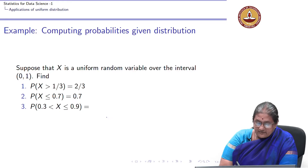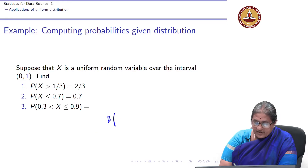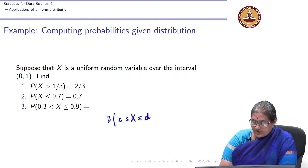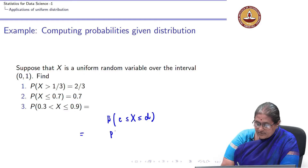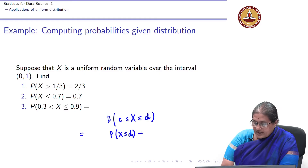Given any two points, the probability C ≤ X ≤ D is the same as probability X ≤ D minus probability X ≤ C. This holds whether the inequalities are strict or not, because X is a continuous random variable.